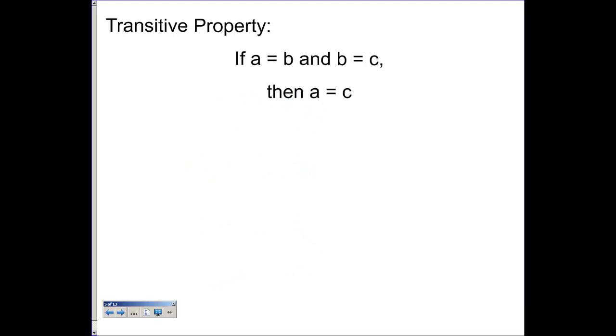Transitive property, if a is equal to b and b is equal to c, then a is equal to c. And an example there might be,